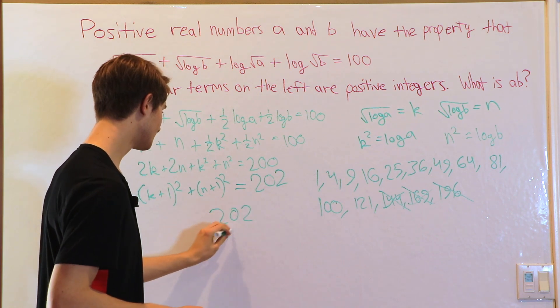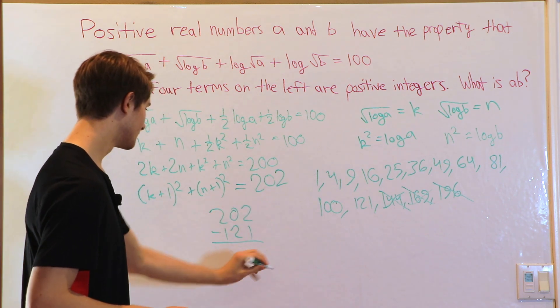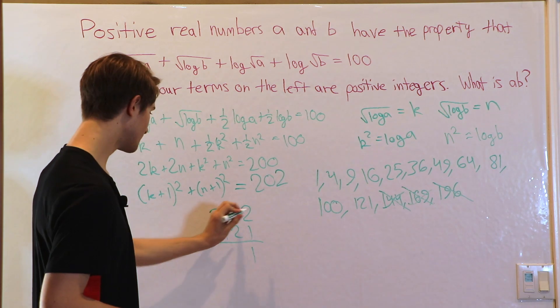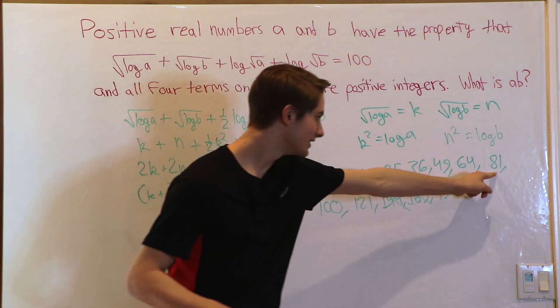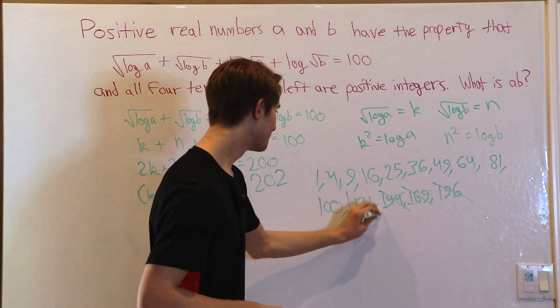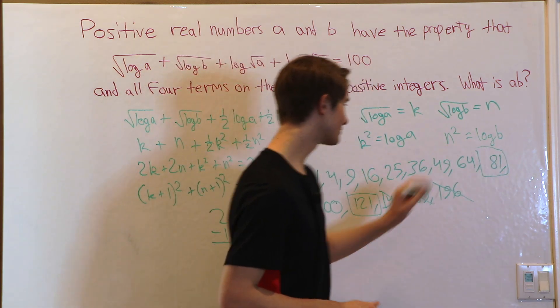What about 202 minus 121? 2 minus 1 is 1. 20 minus 12 is 8. 81. Is 81 a perfect square? Yes, it is. That's 9 squared. Which means these are the perfect squares we want to use.